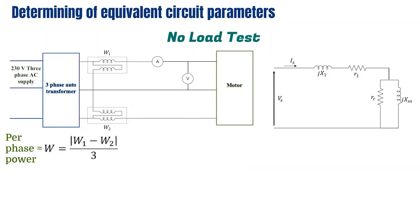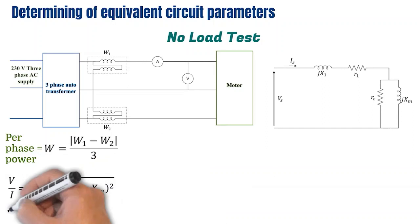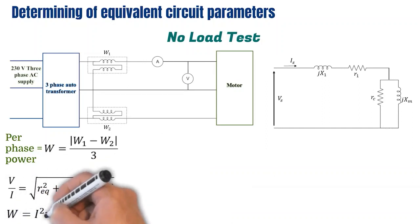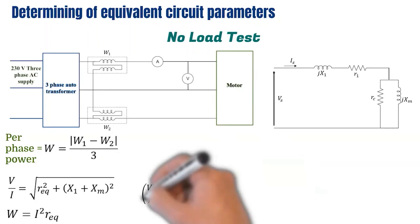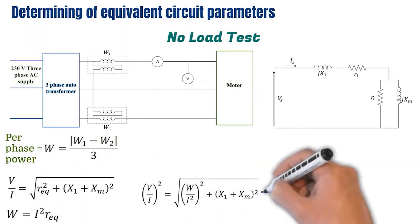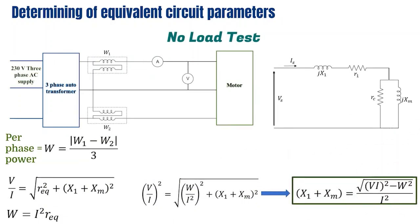Observing the simplified no-load circuit, we can write an equation where R_e (pu) is the resultant resistance responsible for producing the wattmeter power W, I is the ammeter reading, and V is the per-phase voltage obtained by dividing the voltmeter reading by root 3. Finally, with these equations we can derive an expression for X1 plus Xm.